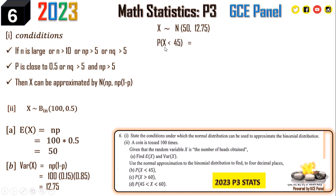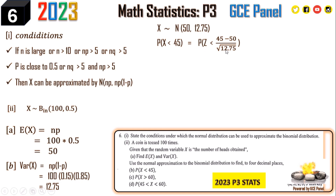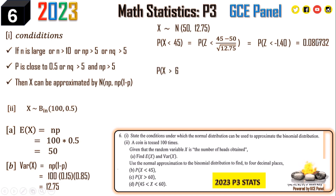To find P(X < 45), we convert to the z-score: P(Z < (45 − 50) / √12.75). This gives P(Z < −1.40). From the statistics tables, the probability is 0.080732, which to four decimal places is 0.0807.